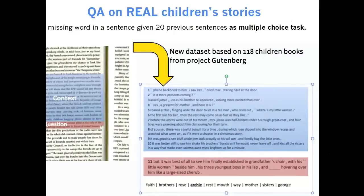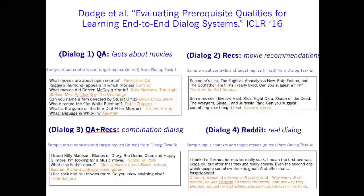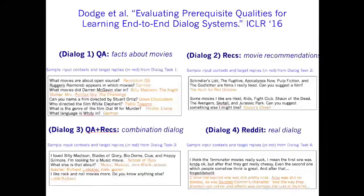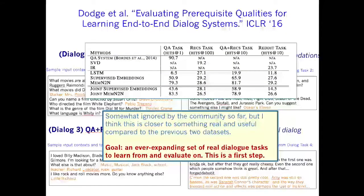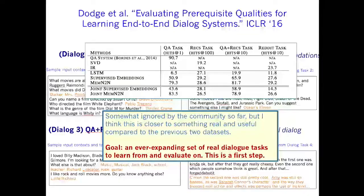Then we made real data — the children's book data, consisting of 118 real children's books from Project Gutenberg. We also made dialogue datasets that test how good you are at predicting the next thing to say on Reddit, as well as doing question answering. Fewer people have used this dataset compared to the baby task and the children's book test, so I think that's an interesting way to go to actually solve dialogue. And that's it, thank you.